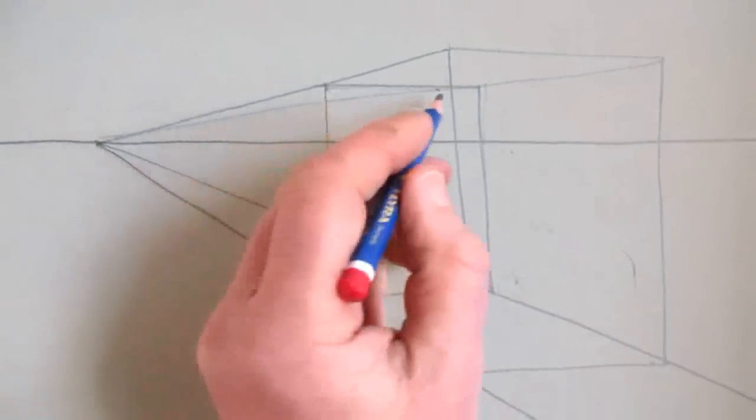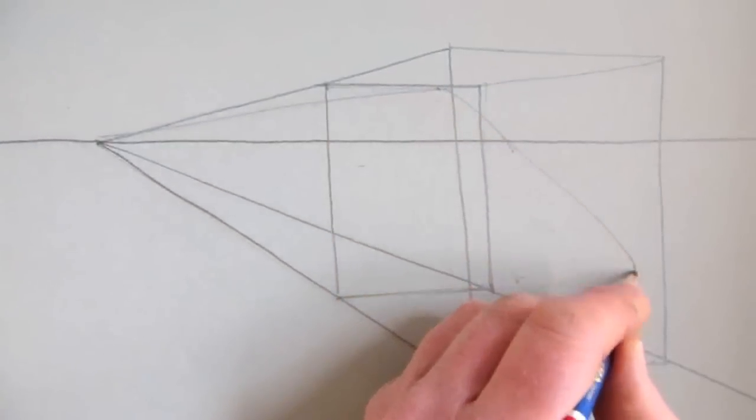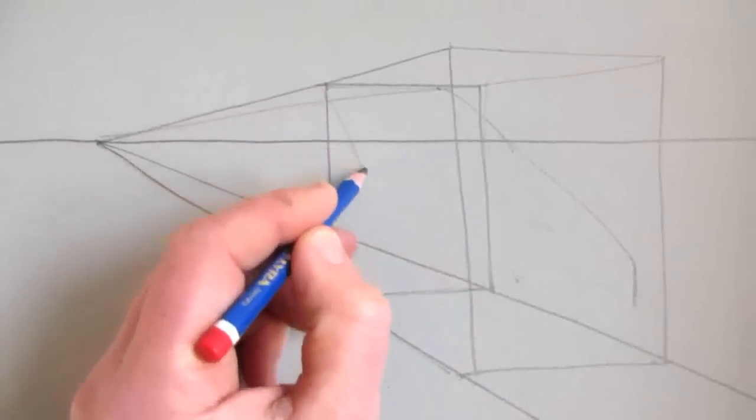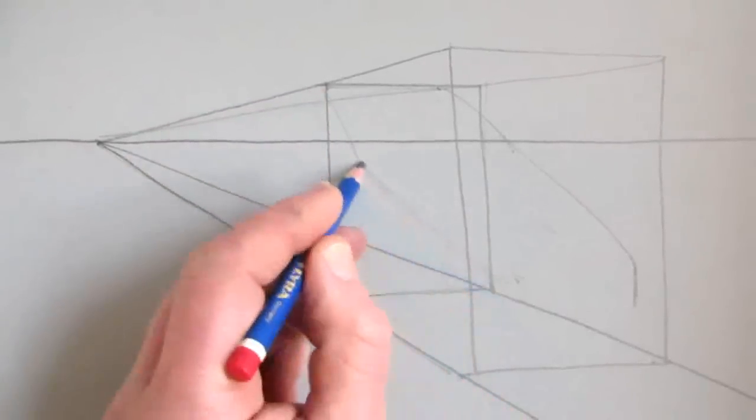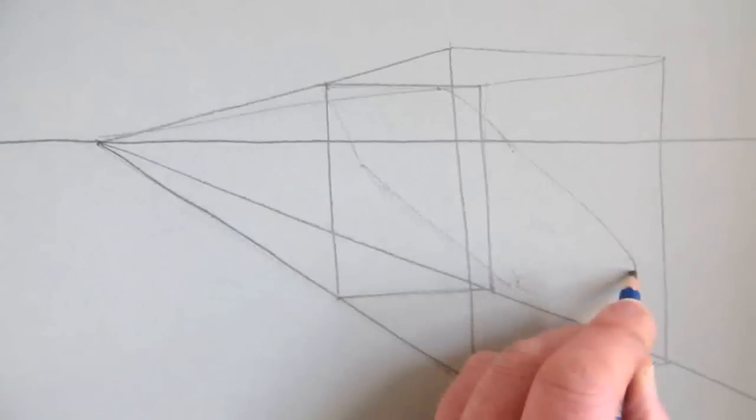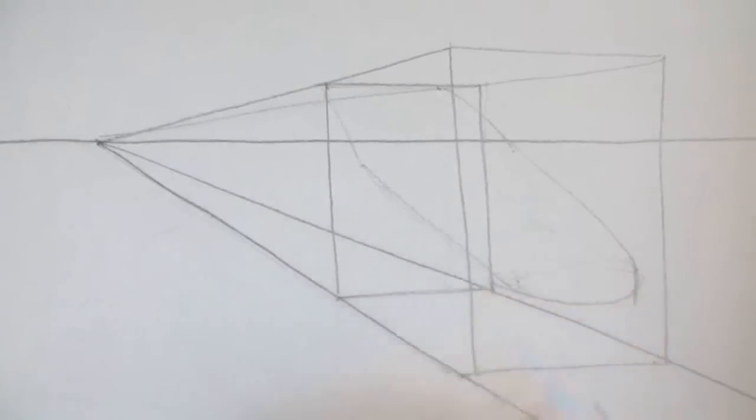The next stage is to draw the shape of your train. This will be a drawing of a modern high-speed train. The front of this train will be symmetrical, so it needs to be the same on both sides of its middle line of symmetry.